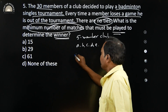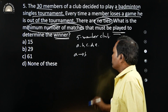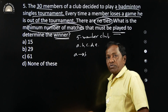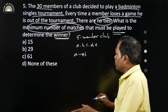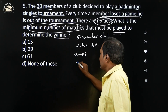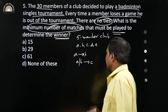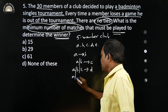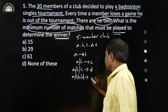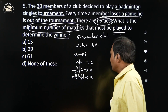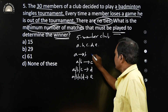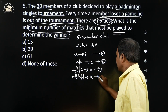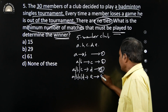Let us start with A. A plays with B and one will be out. The winner — either A or B — will play with C, and the winner will be A, B, or C. And that winner plays with D, giving a winner of A, B, C, or D. And that winner plays with E. So for a five-member club, there are four matches played.